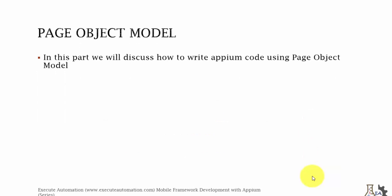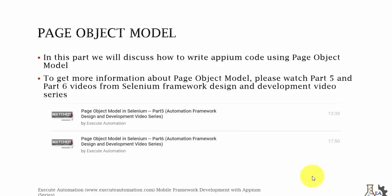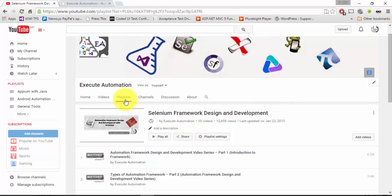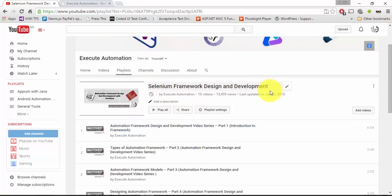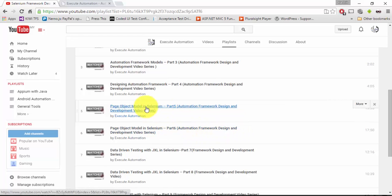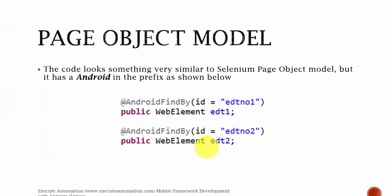Page object model. In this part we will discuss how to write Appium code using page object model. We have discussed a lot of information on page object model in part 5 and part 6 videos from the Selenium framework design and development video series, which is available in our YouTube channel. Those videos talk about page object model concepts as well as writing page object model in Selenium. We'll be using some of the same concepts in Appium as well.